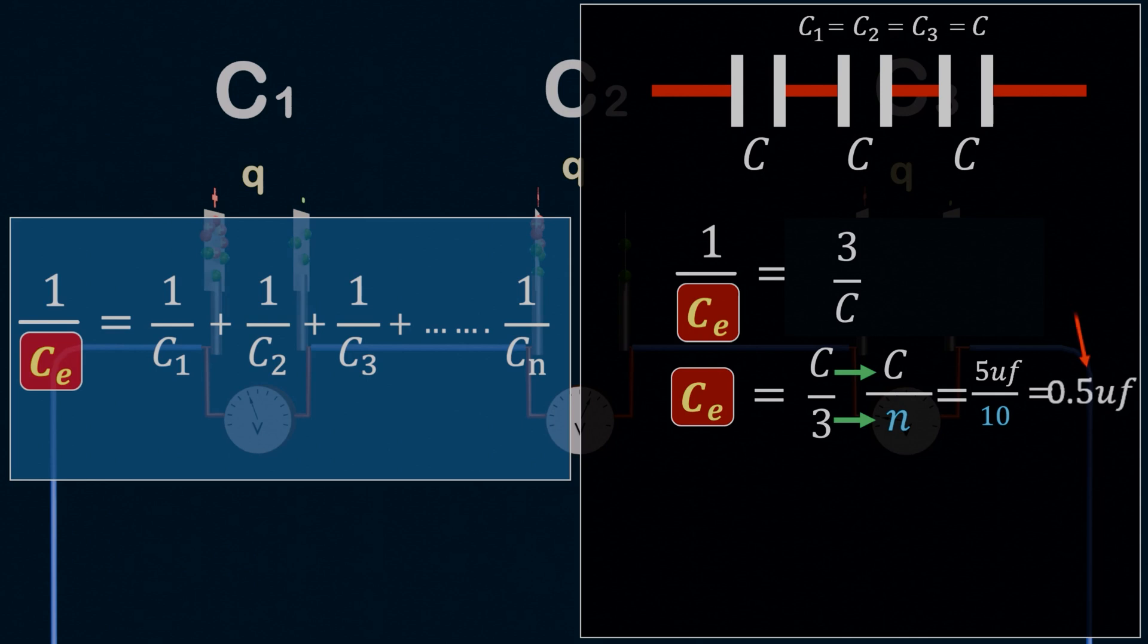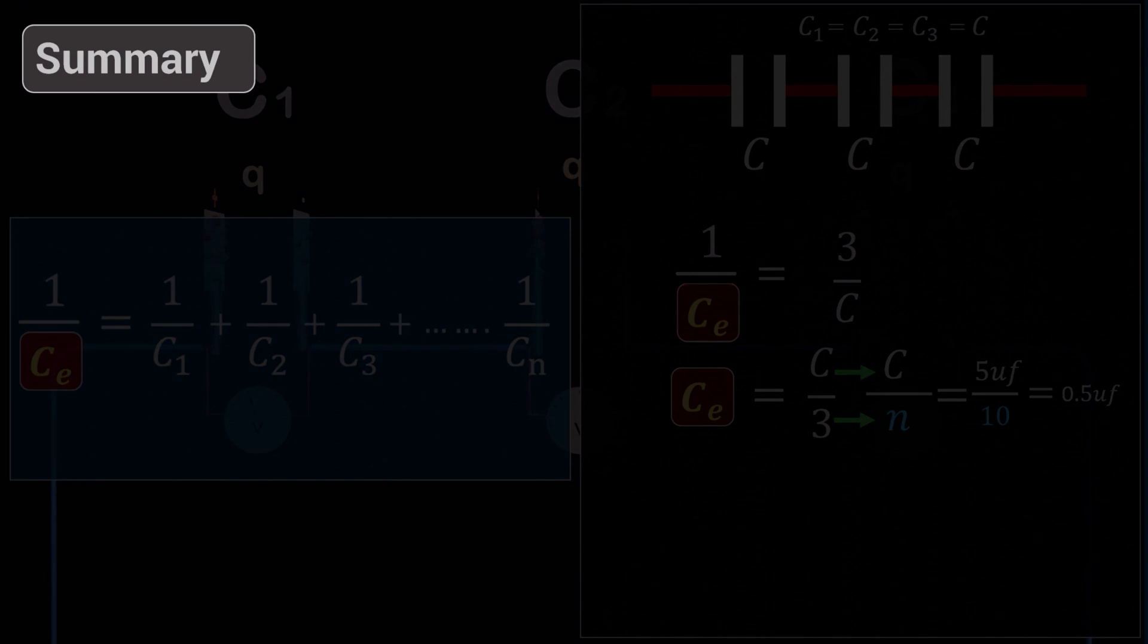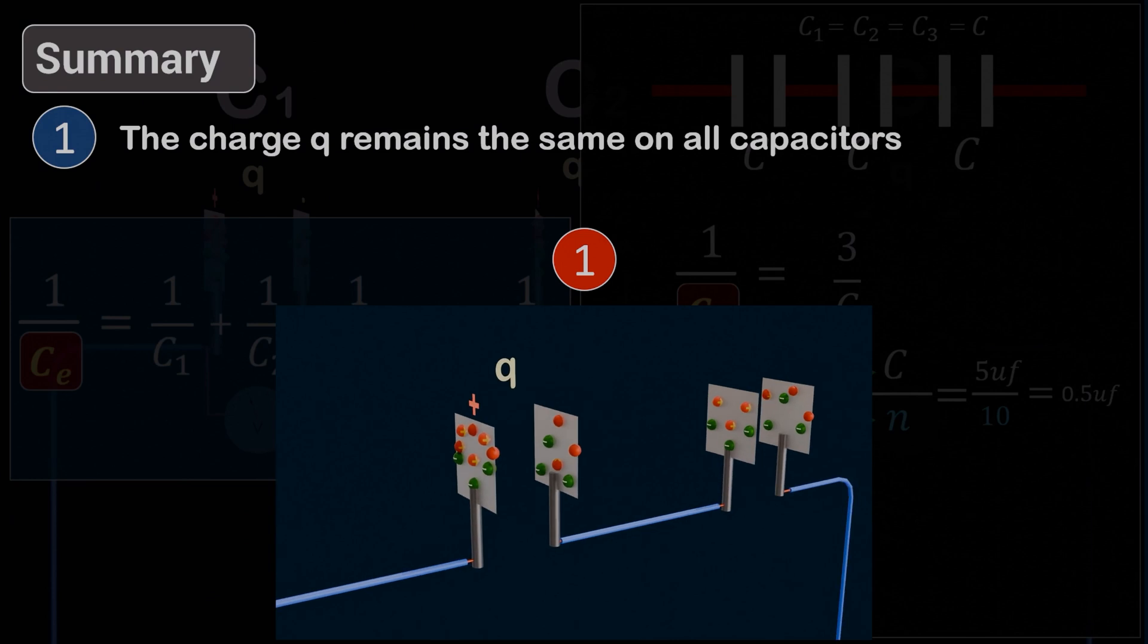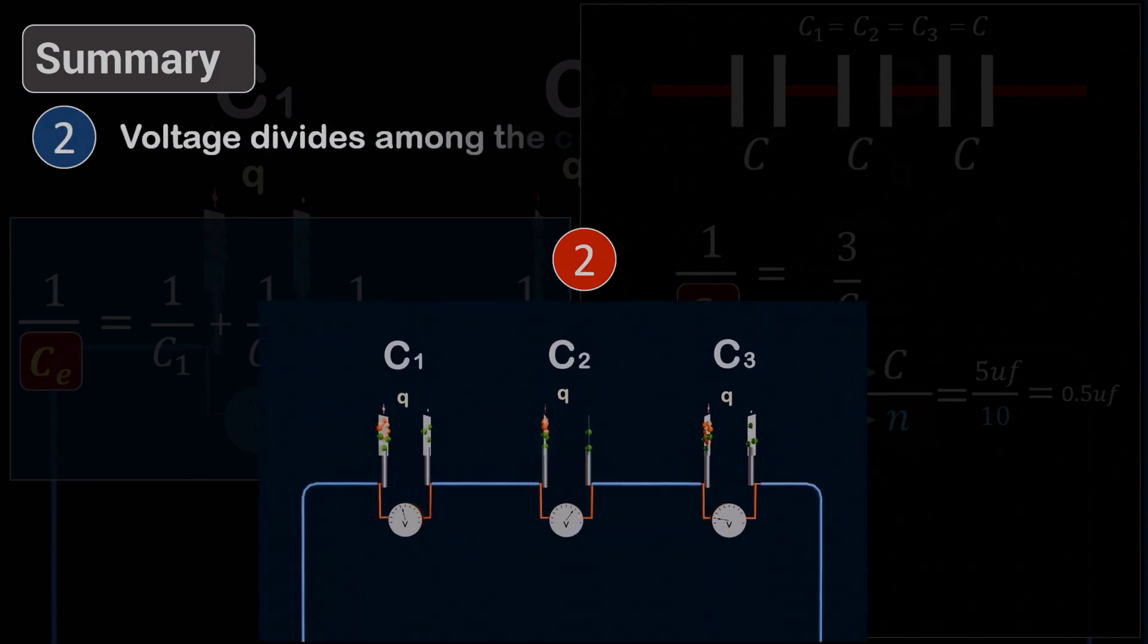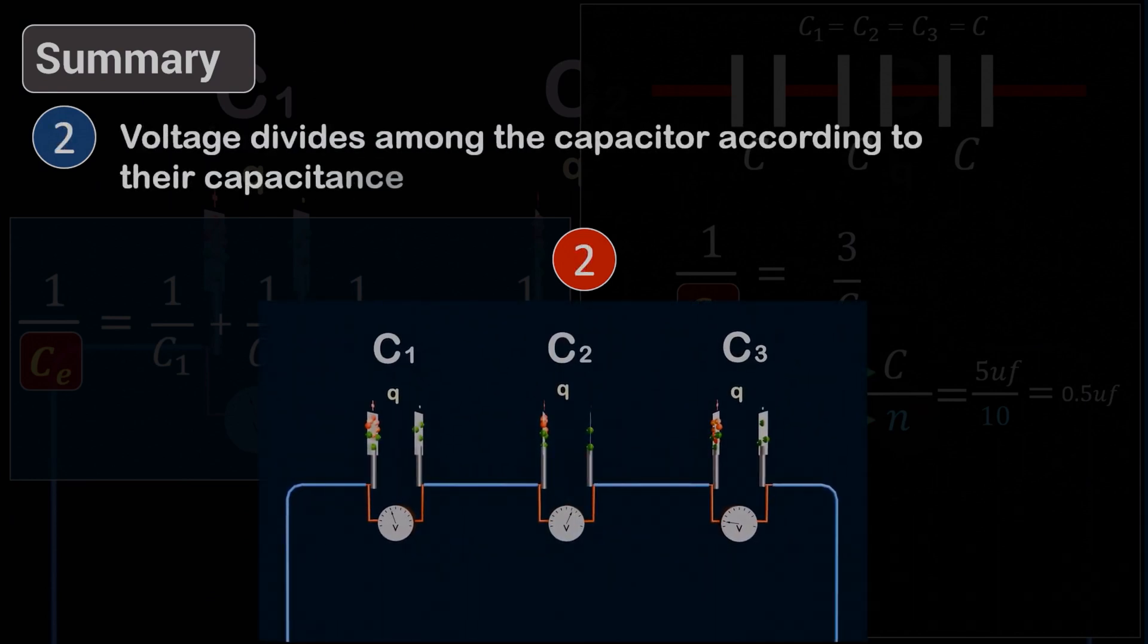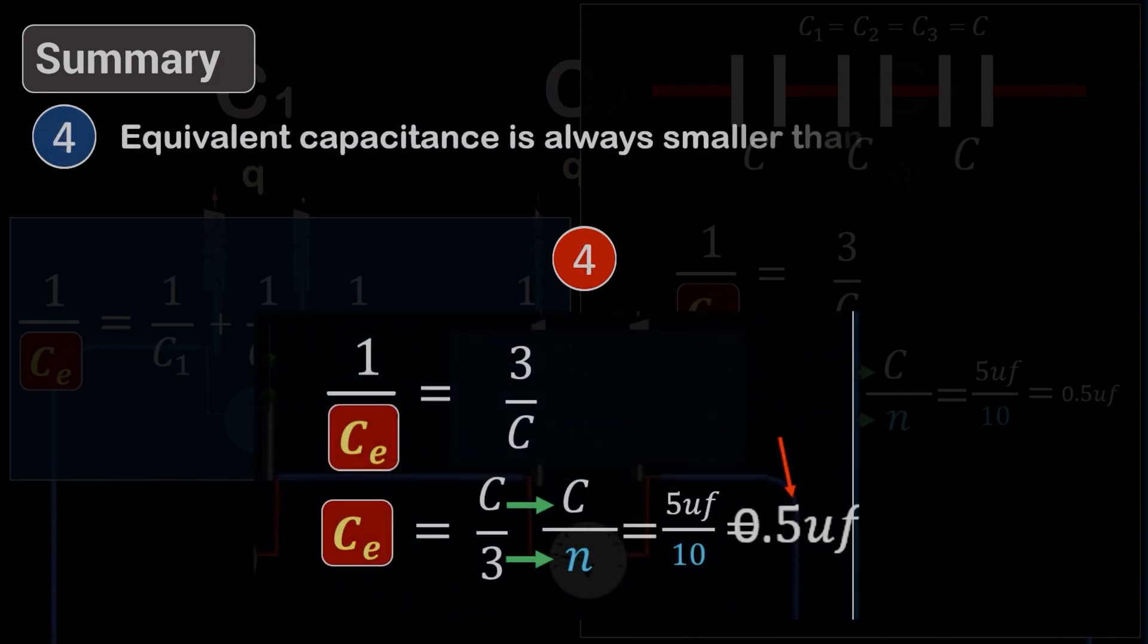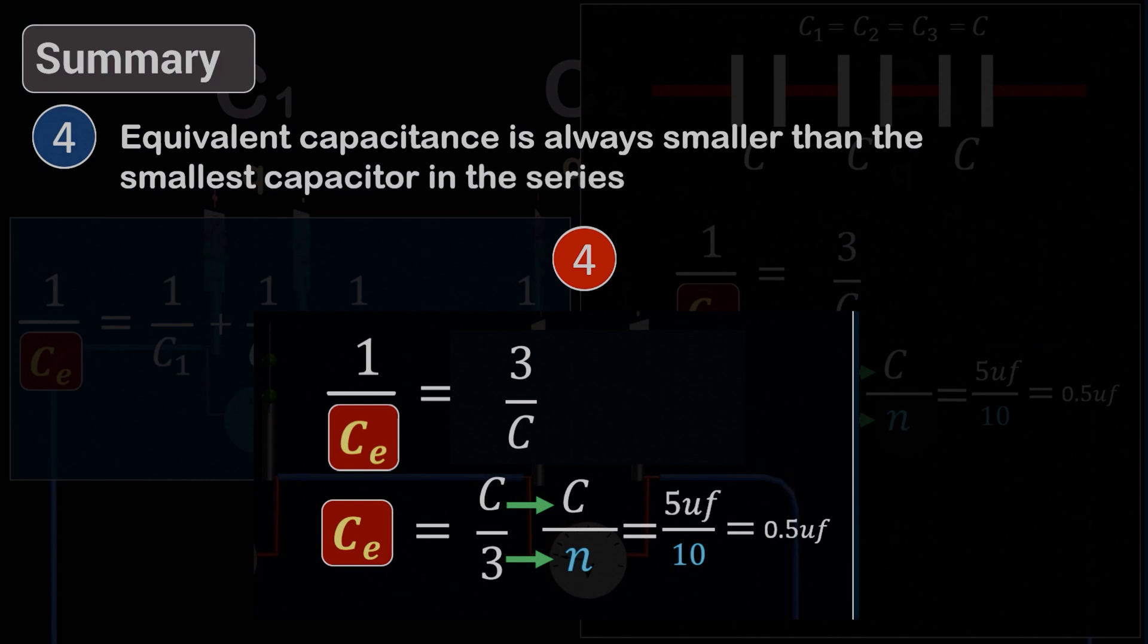In fact, the equivalent capacitance in a series connection is always smaller than the smallest individual capacitor in the group. This is smaller than the capacitance of any single capacitor in the series. So, in summary for series connection: 1. The charge Q remains the same on all capacitors. 2. Voltage divides among the capacitors according to their capacitance. 3. The total capacitance always decreases. 4. Equivalent capacitance is always smaller than the smallest capacitor in the series.